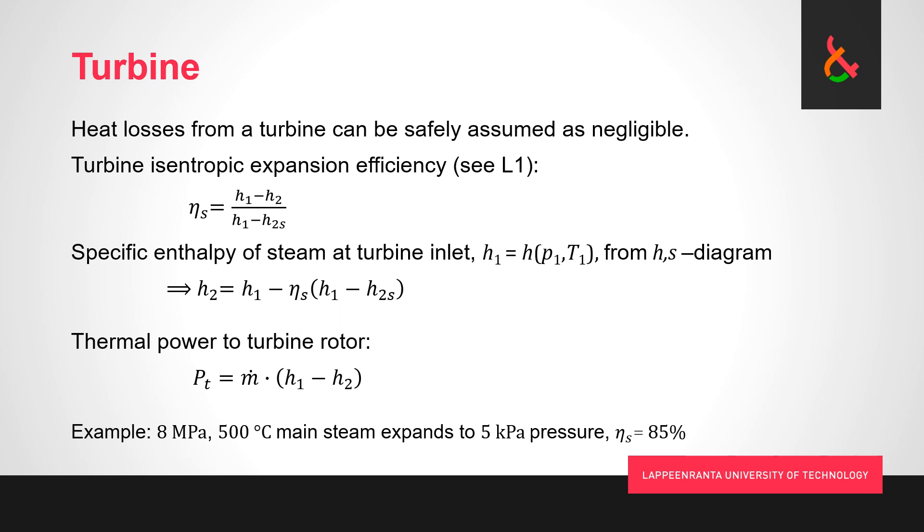We would want to solve what is the end state of the expansion curve, and then we would want to solve turbine thermal power. We have to assume something for the mass flow rate for that to be possible to calculate. But first things first, expansion curve and endpoint.